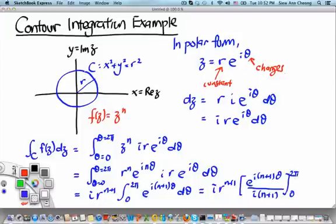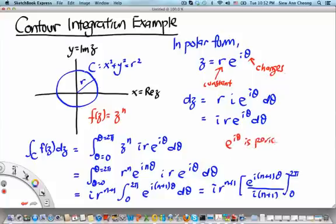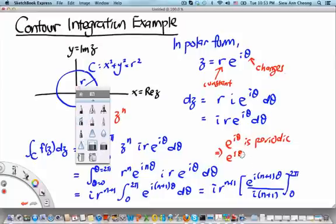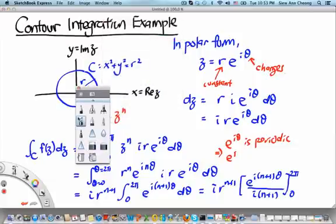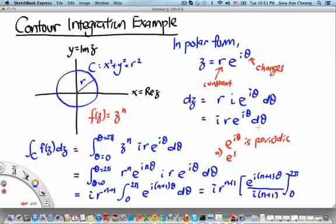And this will have to be evaluated at 2 pi and 0. Now, because e to the i theta is periodic, what this means is that e to the i 0 is equals to e to the i 2 pi.